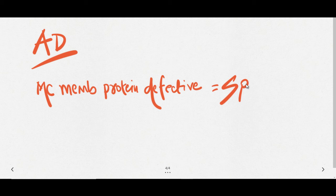The most common cytoskeleton protein of the RBC cell membrane that is defective is spectrin. Spectrin is the most common membrane protein defective in hereditary spherocytosis.